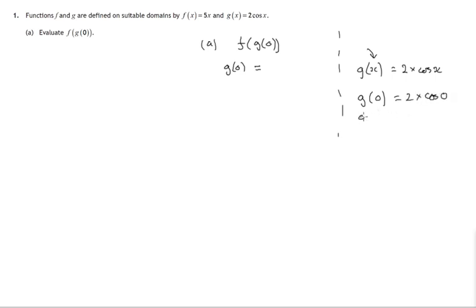Just as if we put pi in, out would come 2 times the cosine of pi. Whatever goes into this function, twice the cosine of that value comes out. So 0 goes in to g, 2 times cos 0 comes out.